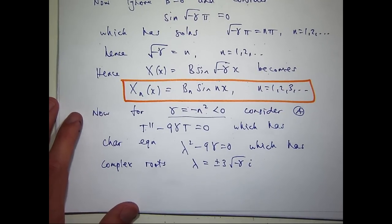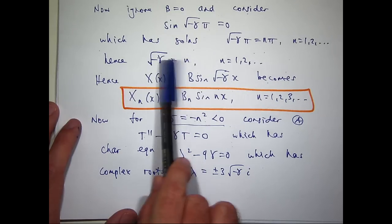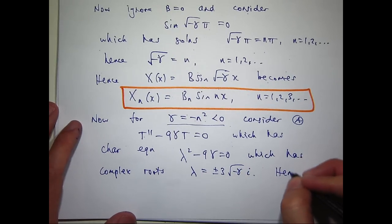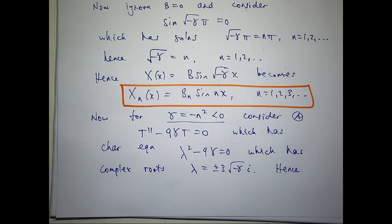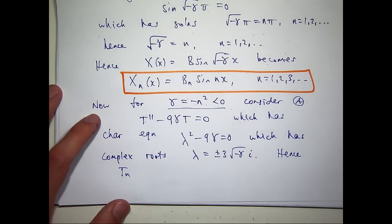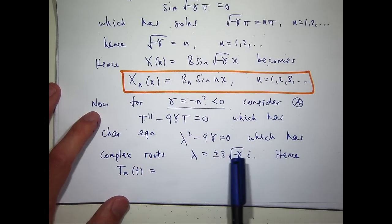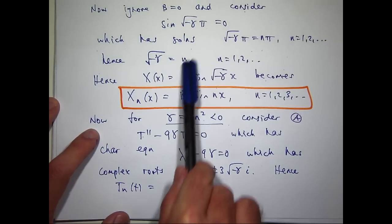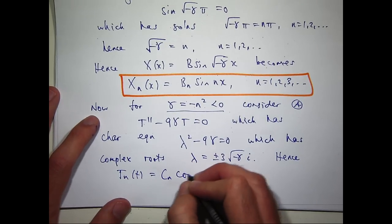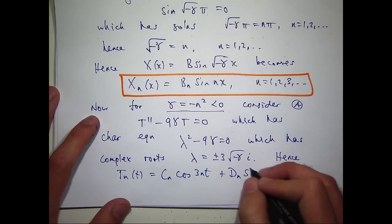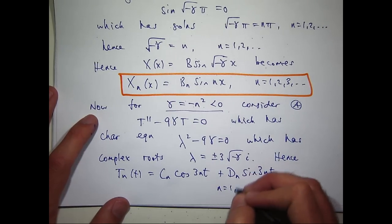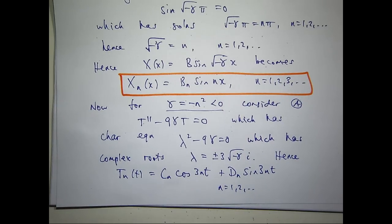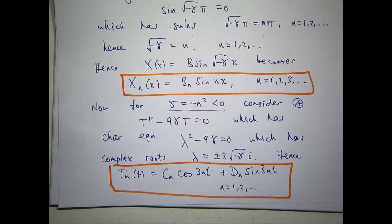To get this in terms of n, I replace gamma with minus n squared. We can form a sequence of functions big T sub n. Instead of writing cosines and sines separately, let's form the sequence straight away. The c sub n's and d sub n's are sequences of constants — we don't know what they are, but we want to determine them.